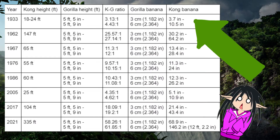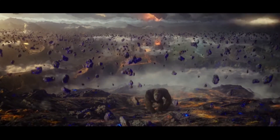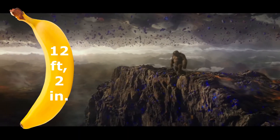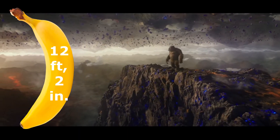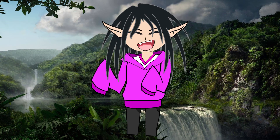And thus, the math yields us this. At his smallest size in 1933, Kong's banana was only between 3.7 and 10.5 inches, meaning it was not that much different from a typical banana. While at his biggest size in 2021, Kong's banana could have possibly measured up to over 12 feet long, or about 2 and 1/8 Andy Serkises. And that is how big King Kong's banana is.